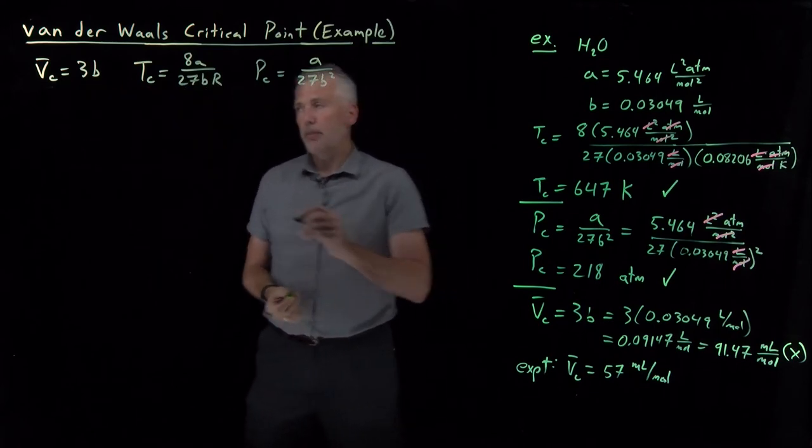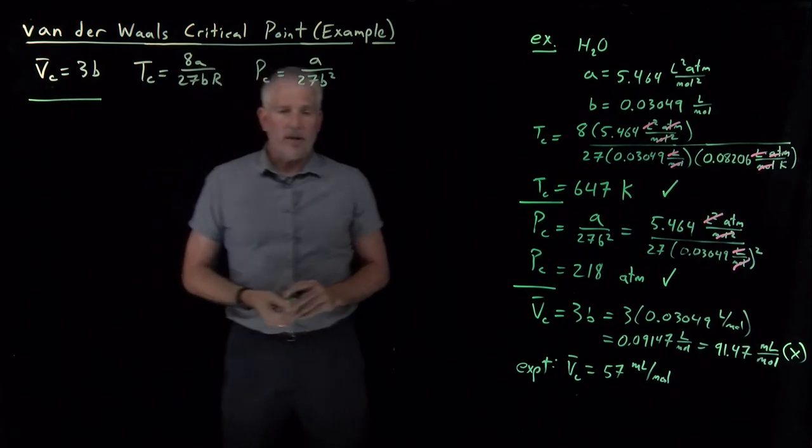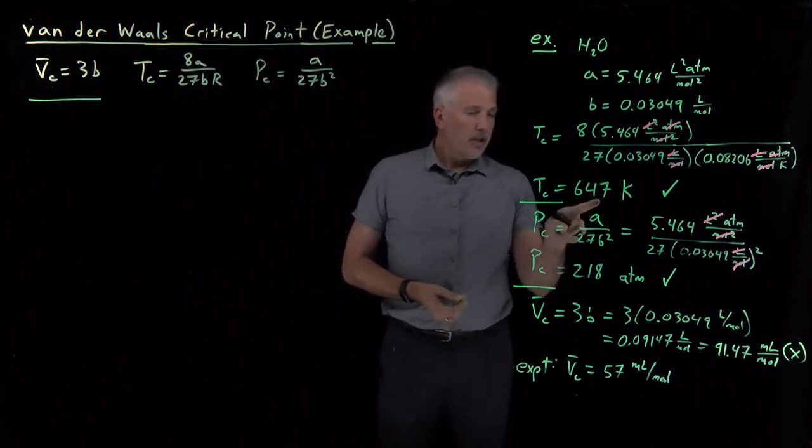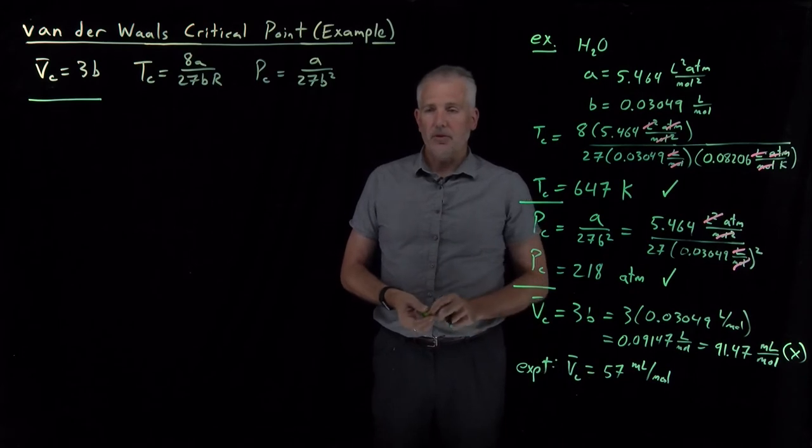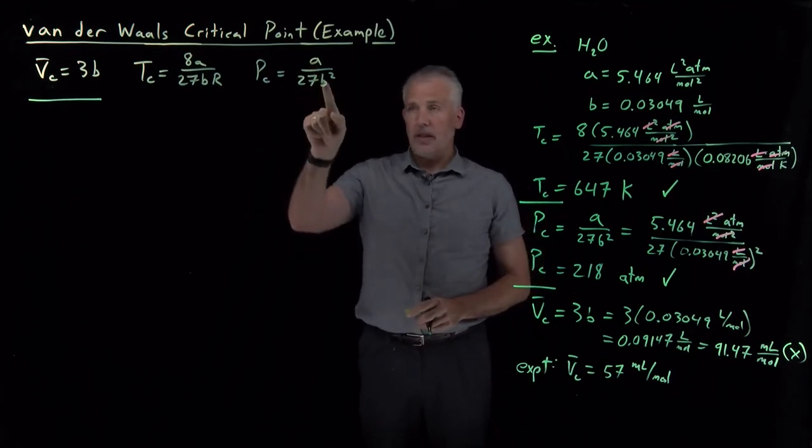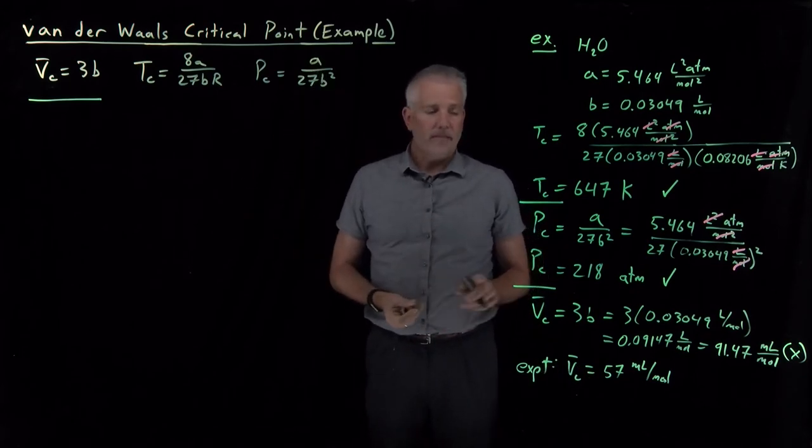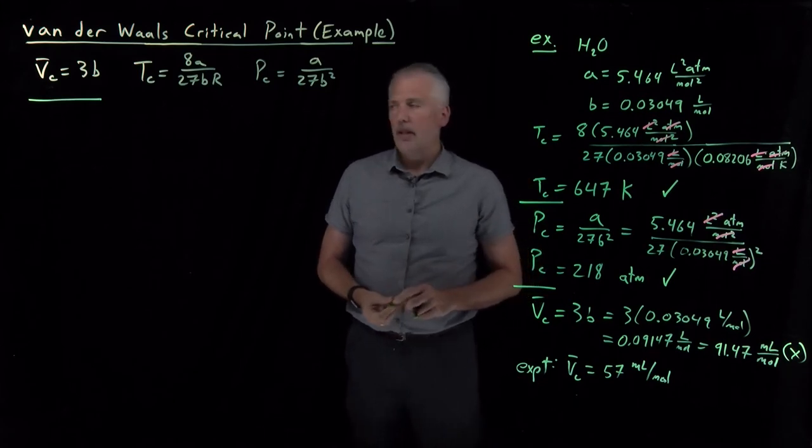The other way we can think about that problem is to do it the other way around. If I know the experimental critical temperature, critical pressure, critical volume, I can use those to solve for the Van der Waals coefficients that best predict that critical point.